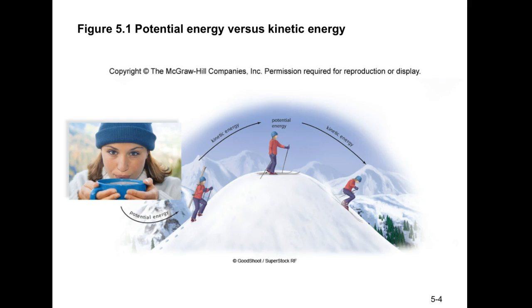Consider a swing, which in physics is a pendulum — you see energy conversions between potential and kinetic energy. Similarly, a person walking up a slope demonstrates kinetic energy while moving, potential energy at rest at the top, and kinetic energy again coming down. It's essentially the same as swinging on a swing: at the bottom of the arc you have maximum kinetic energy.